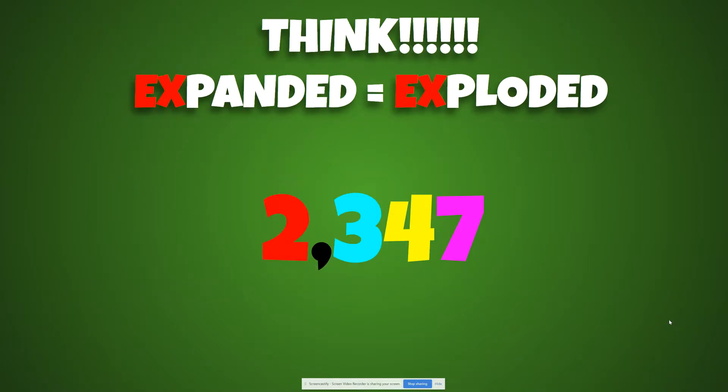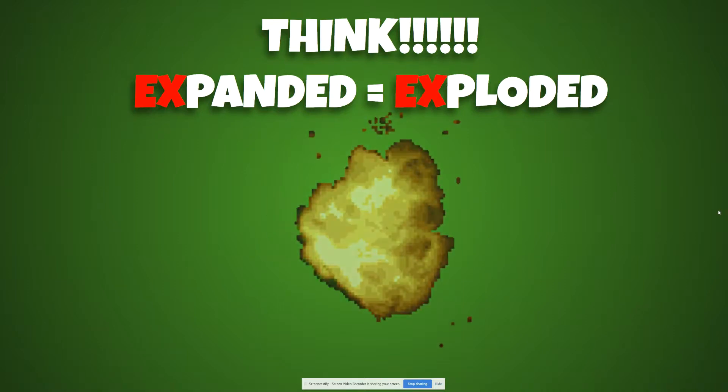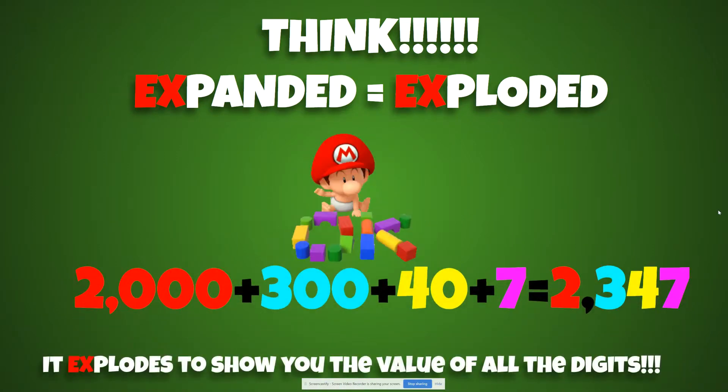Now think. Expanded equals exploded. So 2,347 explodes to show the value of each digit.